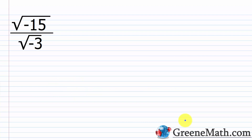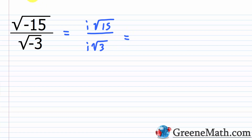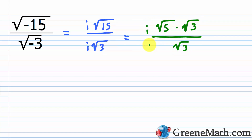When dividing radicals involving two negatives, we use the same process: convert each form first. The square root of negative 15 becomes i times the square root of 15, and the square root of negative 3 becomes i times the square root of 3. The square root of 15 is the square root of 5 times the square root of 3. So we have i over i — which cancels to 1 — and square root of 3 over square root of 3, which also cancels to 1. That leaves just the square root of 5 as the simplified answer.